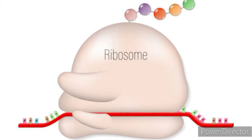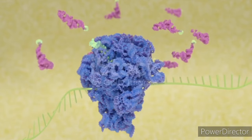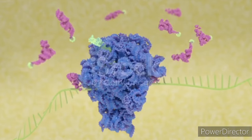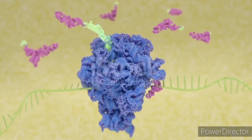Two Subunits: Ribosomes are composed of a small and a large subunit, each with their specific roles during translation. The small subunit reads the mRNA, while the large subunit joins amino acids to form a polypeptide chain.